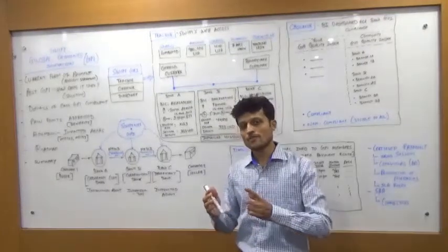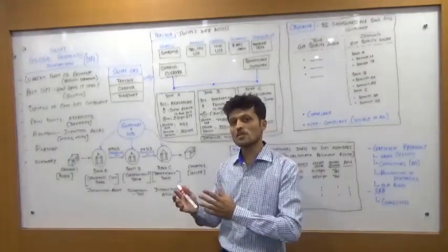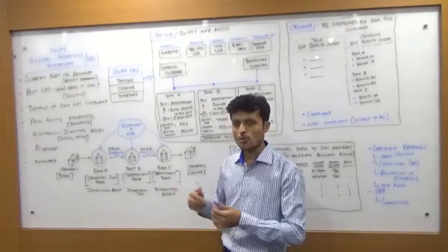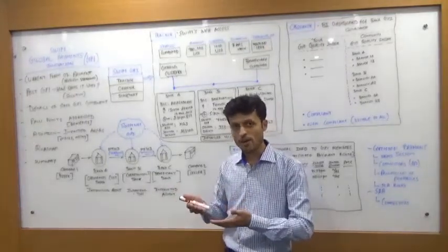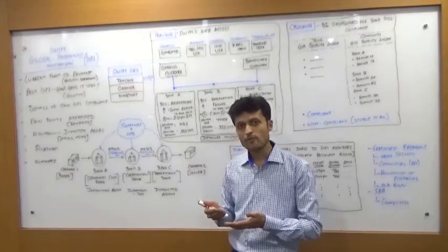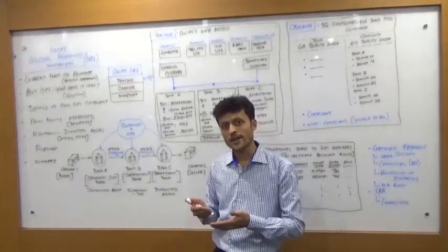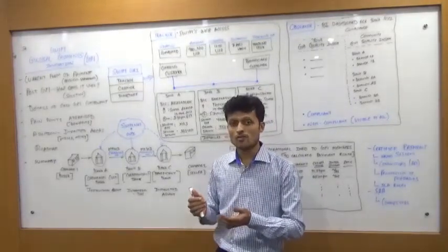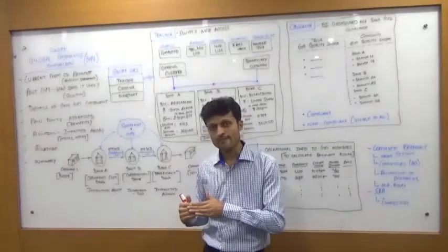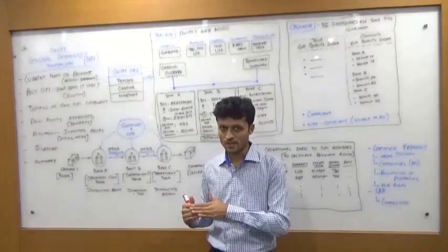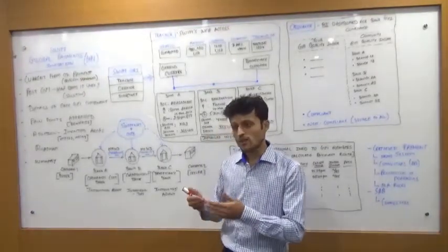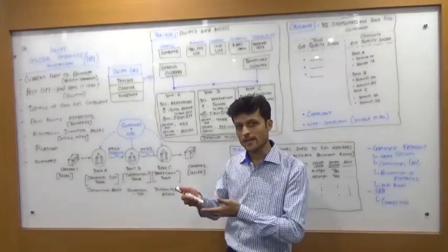We're talking about the adoption of SWIFT GPI. More than 120 plus banks have already opted for SWIFT GPI, around 24 banks are already live with the GPI now, and 40 banks will be live by end of this year, that is year 2017. This brings a very good adoption rate.